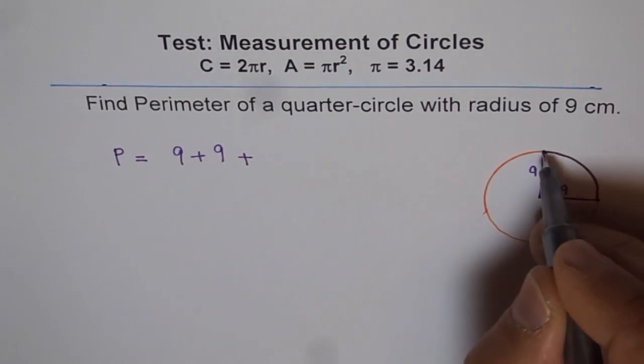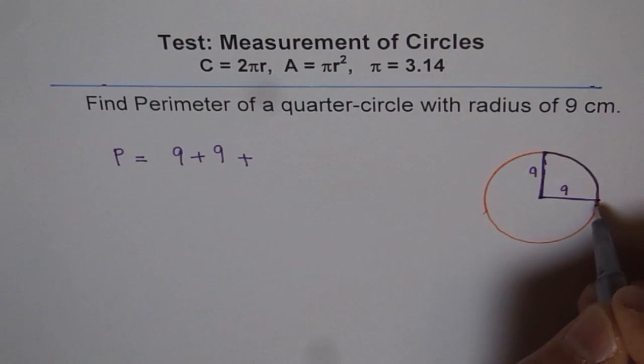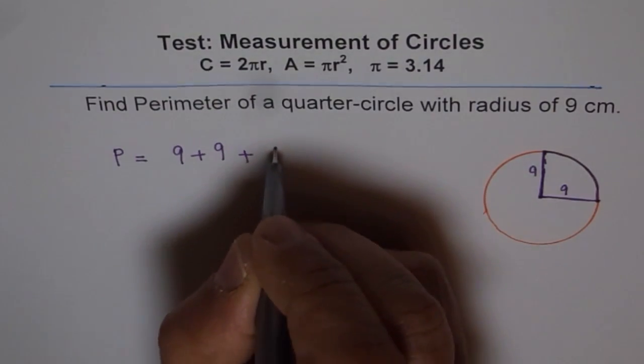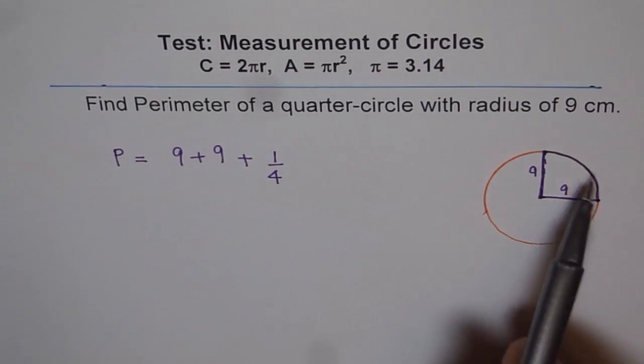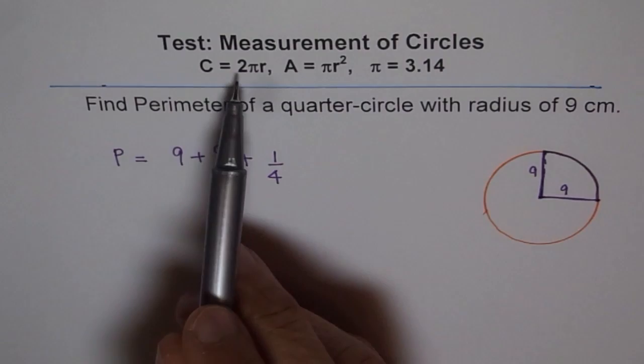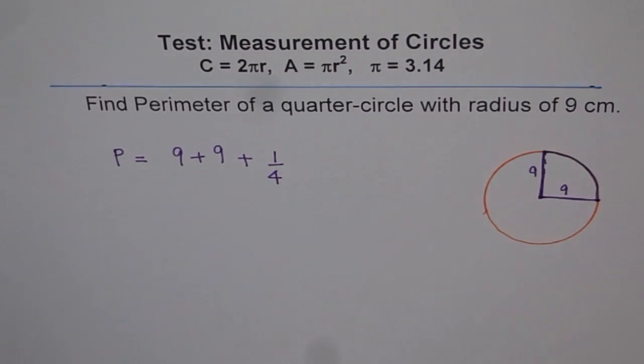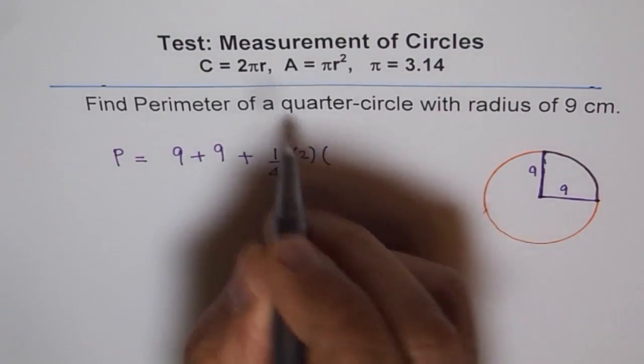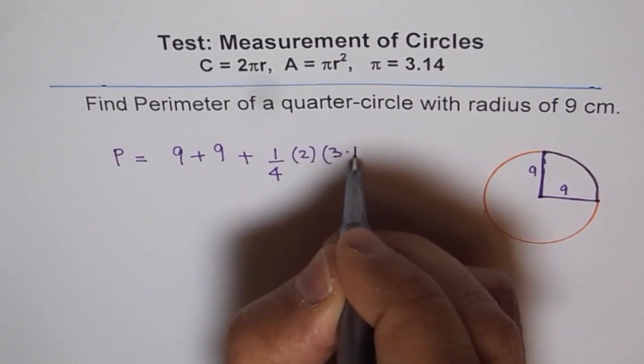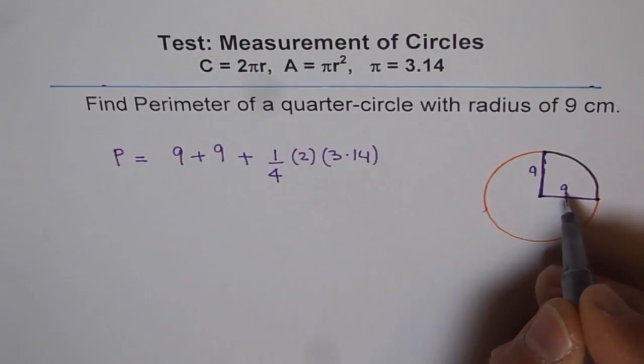Plus we have this circular path. This circular path is 1 fourth, is quarter of the whole circle, is 1 fourth of 2 pi r, right? Full circle perimeter will be 2 pi r. So it is 2 times, pi is 3.14 and the radius is 9.